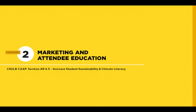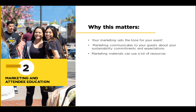Why is this an important category for this program? Category 2 focuses on designing your marketing tools in a way that shines a light on your equitability and sustainability efforts. This matters because your marketing sets the tone for your event, communicating to your guests about the sustainability commitments and expectations that you have. Marketing materials also, in printing and creating them, can use a lot of resources.